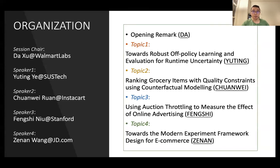The organization of today's session is as follows. As the session chair, I'm going to address a very brief opening remark. Then I'm going to hand over to our first speaker, Yutin, from SUS Tech University, to talk about his research on towards robust off-policy learning and evaluation for runtime uncertainty. Then our second speaker, Chuan Wei, from Instacart, which is a fast-growing grocery delivery company based in San Francisco, is going to talk about ranking grocery items with quality constraints using counterfactual modeling.